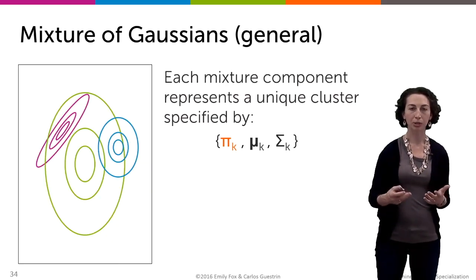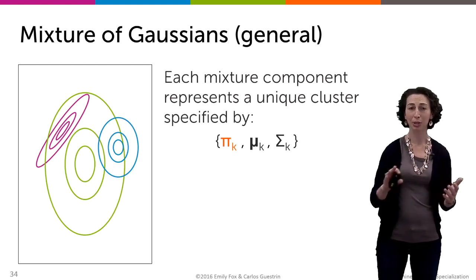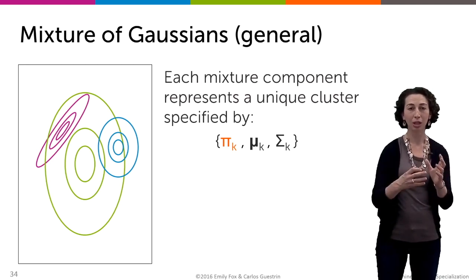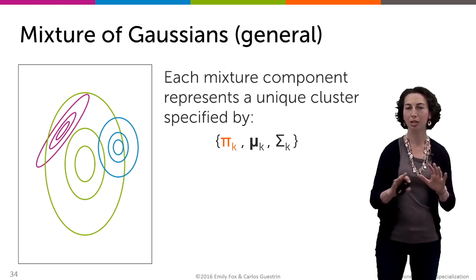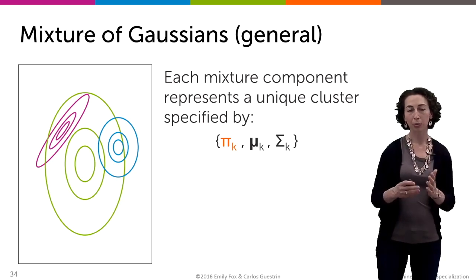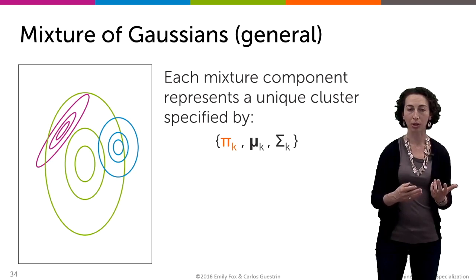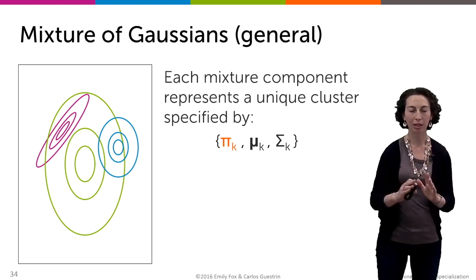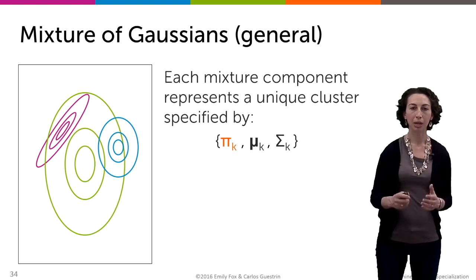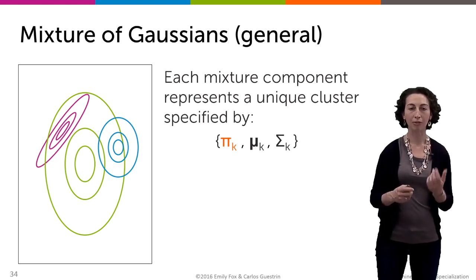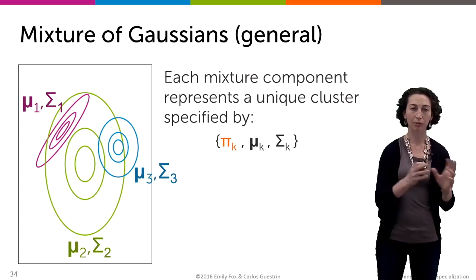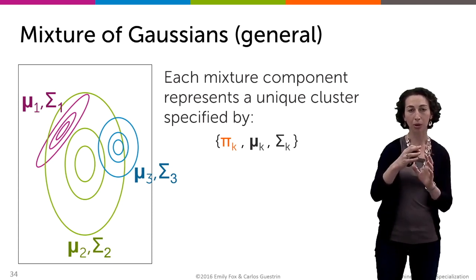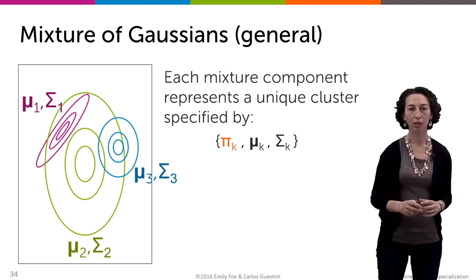When we're thinking about mixtures of Gaussians in higher dimensions, we end up with just a generalization of the cluster parameters I talked about on the previous slide. The mixture weights are exactly the same, that doesn't change or vary with dimensionality. But now instead of just a mean and a scalar variance, we have a mean vector and covariance matrix for each one of these Gaussians. These means and covariances specify not only the location, but also the shape and the orientation of these different ellipses.